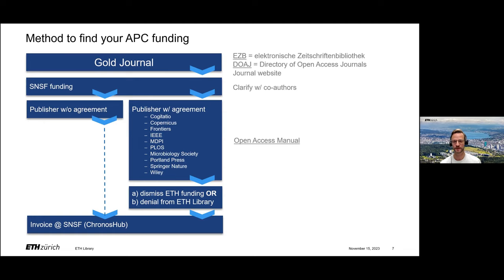To figure out whether a journal is gold or hybrid, I recommend the EZB — in German, Elektronische Zeitschriftenbibliothek. Alternatively, you can use the Directory of Open Access Journals, the DOAJ. When a journal is indexed in the DOAJ, it must be a gold or diamond journal, because hybrid journals are excluded from the DOAJ.